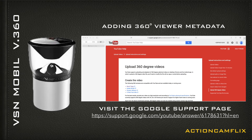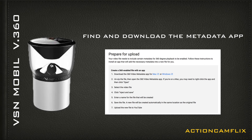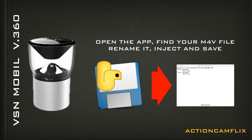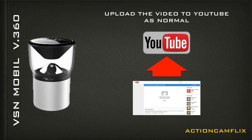Go to the Google support page shown here — I'll also put a link in the video description in case it changes. You need to find and download the metadata app. This is a free app that injects the metadata so that it plays in 360 mode. Install the app, find your M4V file, rename it, and save.